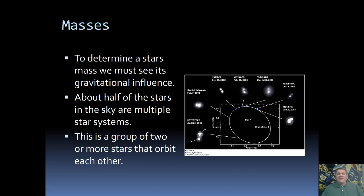Well, fortunately for us, about half of all stars in the sky are actually part of multiple star systems, with most of those being binaries. A binary are two stars that are orbiting around each other.